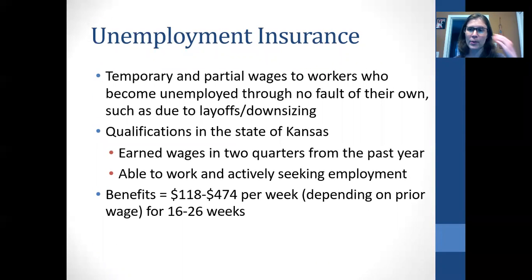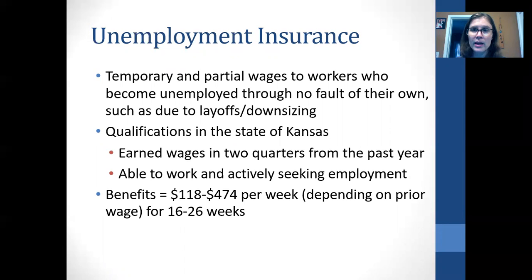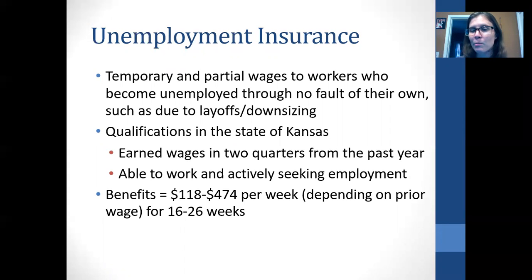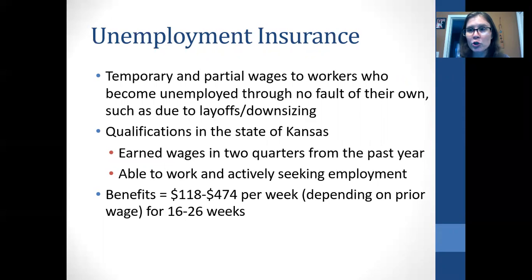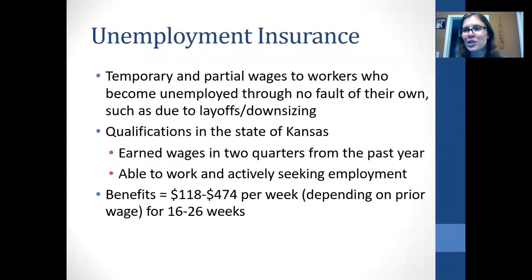The next type of social insurance program is unemployment insurance, commonly called unemployment. This is when someone loses their job and is able to receive benefits. The main things to keep in mind: unemployment benefits are meant to be temporary, they are partial wages — not your full wages, only a small portion — and you have to have become unemployed through no fault of your own. If you've been laid off due to downsizing, you can be eligible. If you quit your job or were laid off for misconduct — like being consistently late — you're not going to receive unemployment.